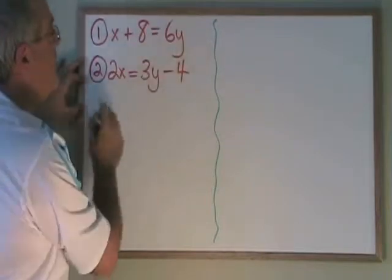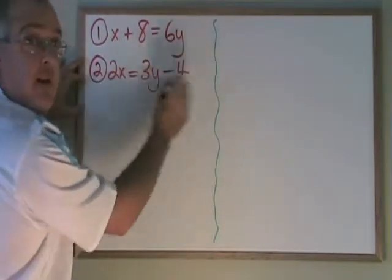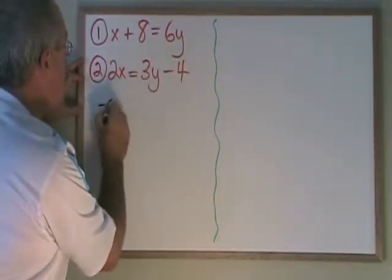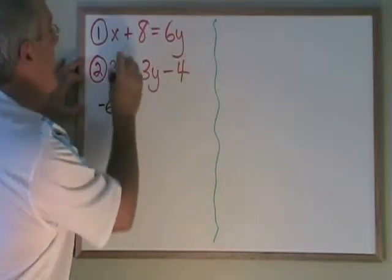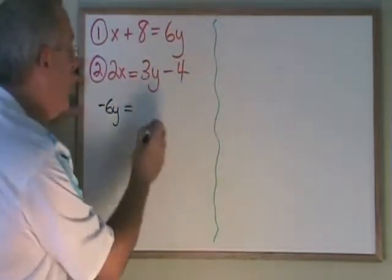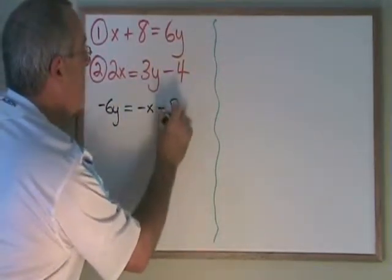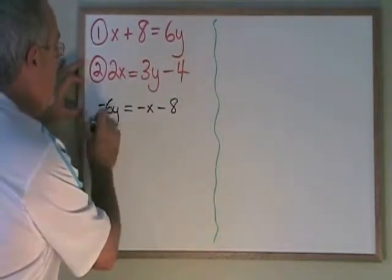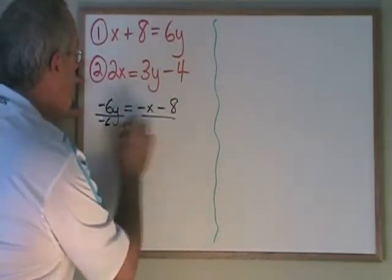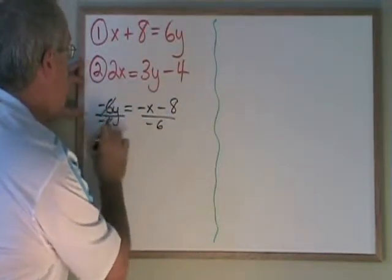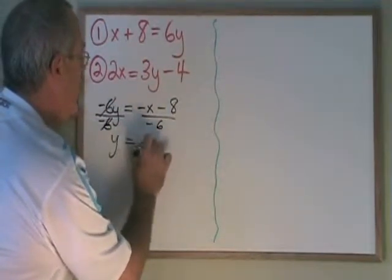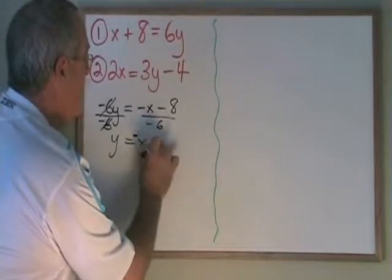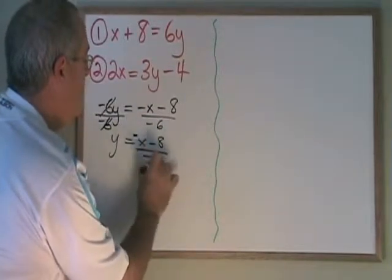So, this first equation, I can move the 6y to the left of the equals and it becomes negative 6y. If I move the x and the 8 to the right, they become negative x minus 8. Then, I can divide both sides by negative 6. These cancel. y is equal to negative x minus 8 over negative 6.